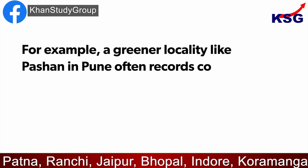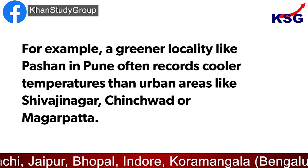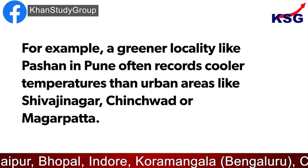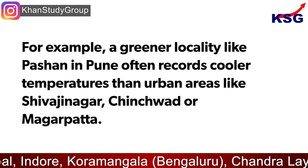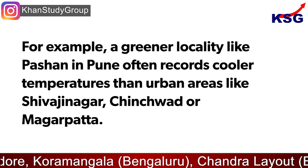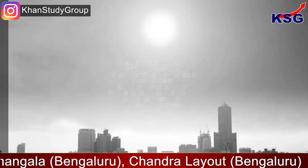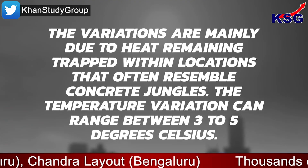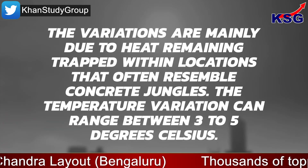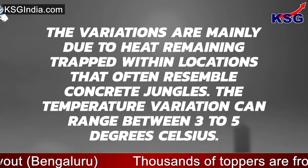For example, a greener locality like Pashaan in Pune often records cooler temperatures than urban areas like Shivajinagar, Chinchwad or Magarpatta. The variations are mainly due to heat remaining trapped within locations that often resemble concrete jungles.